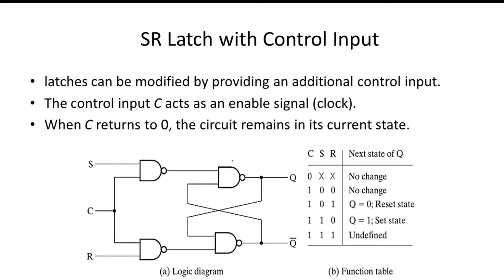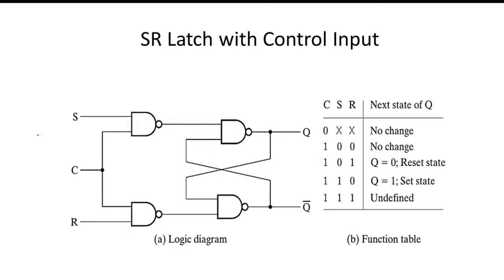Next we saw the SR latch with control input. We added two NAND gates, one for S and one for R, plus an additional input C — referred to as the clock or control input. If C=1 the latch is active; if C=0 it is inactive and the state does not change. Even if the clock was 1 and the latch was in set state, turning the clock to 0 holds the previous state. Similarly, if the clock is 1 and inputs are 0-0, it again holds the previous state.